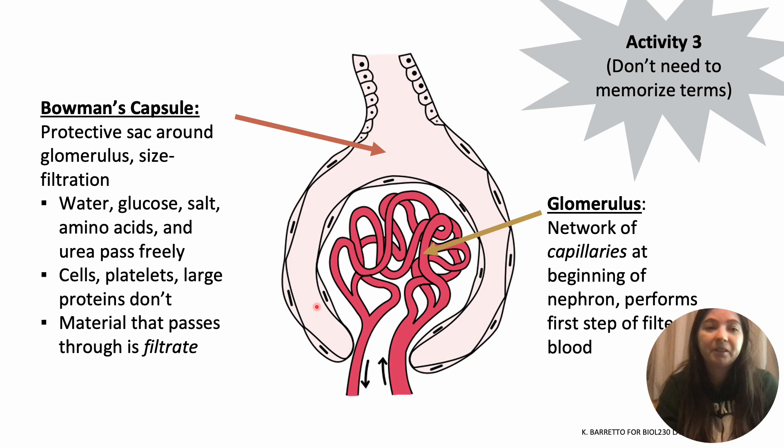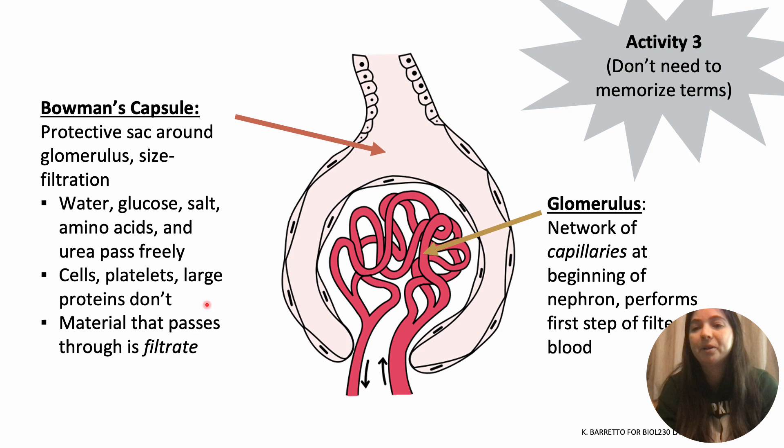So this is a sac basically around this huge filter, and things that can pass through are water, glucose, salt, amino acids, and urea. All of that stuff will come out of the glomerulus and get taken to the Bowman's capsule. Cells and platelets, like large proteins — that kind of stuff that is not able to go through — will come back out this way and continue down the excretory system.